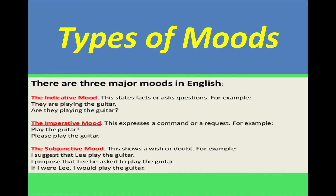Indicative mood states facts or asks questions — negative, positive, interrogative — three kinds of sentences. For example: 'They are playing the guitar.' 'Are they playing the guitar?' These are examples of indicative mood.